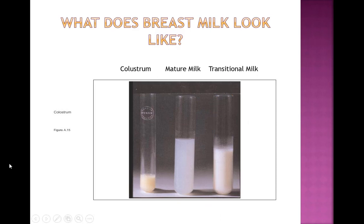Colostrum is what the body makes during lactogenesis 1. During lactogenesis 2, we start to see transitional milk, and most likely by day nine or so we might see some mature milk.